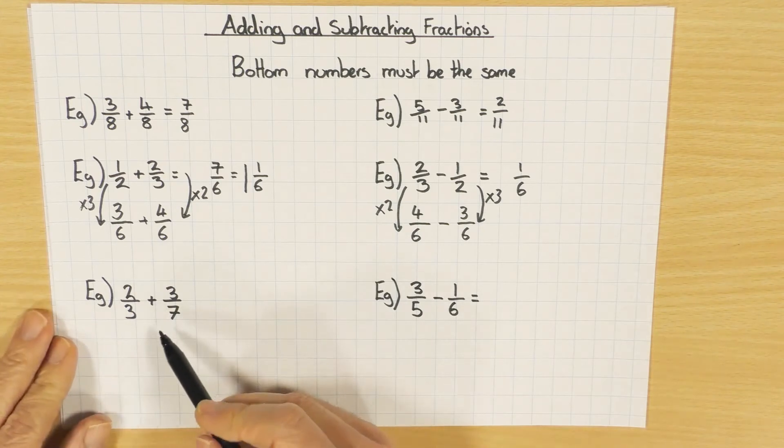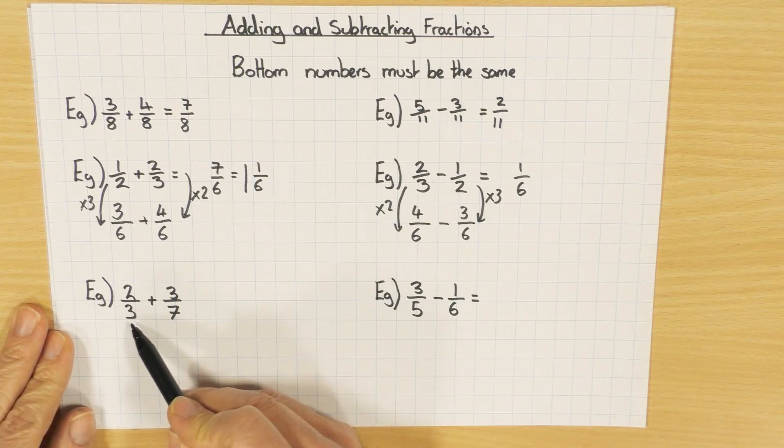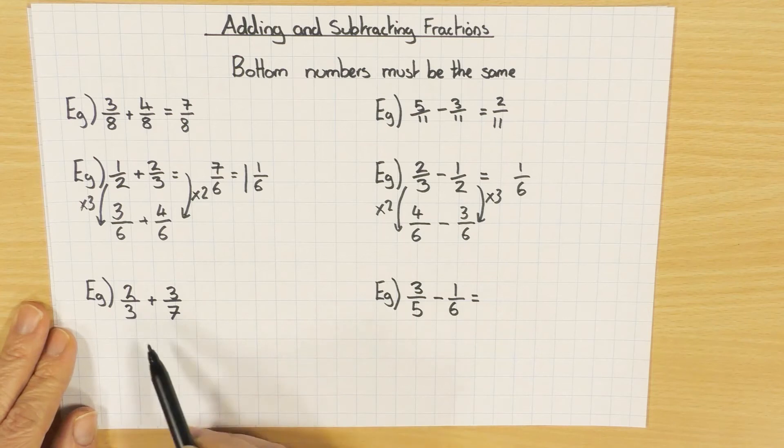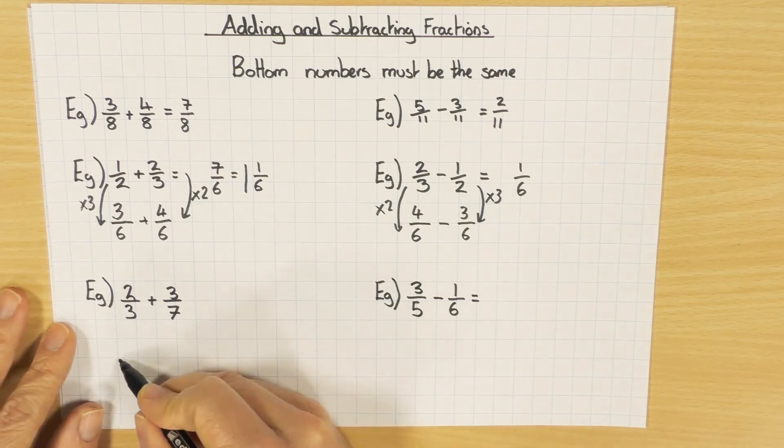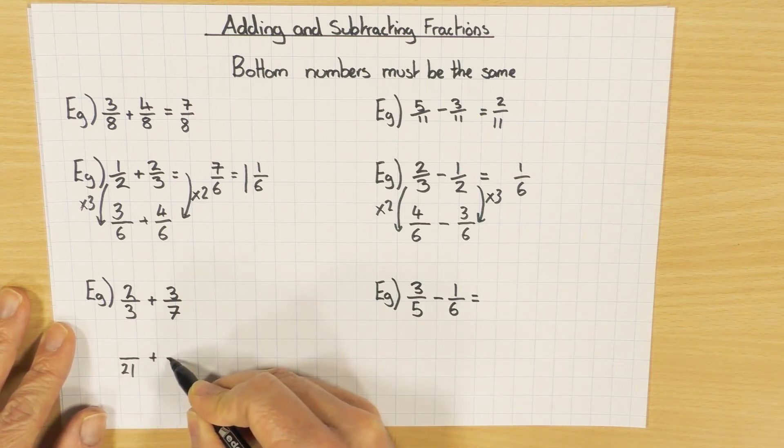Again, a similar approach, but this time we've got different times tables. So what common multiple is for three and seven? So you open your three times table, you're going to your seven times table. Three times seven is another way of looking at a common multiple. We're going to get the answer of 21 though. That's actually the lowest common multiple as well.